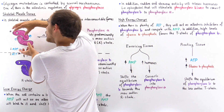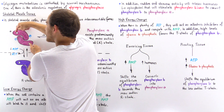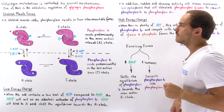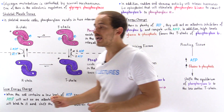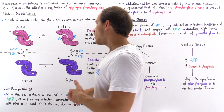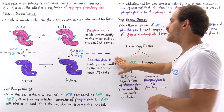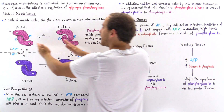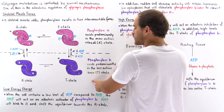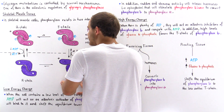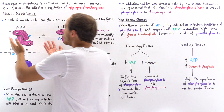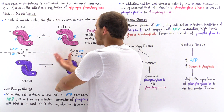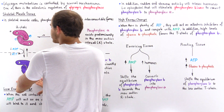In contrast, in the R state, as a result of the loose conformation of the dimer structure, the active sites are open — the R state is the fully active form. The activity will be high in the R state and low in the T state. Phosphorylase A exists predominantly in the R state, while phosphorylase B exists predominantly in the T state, meaning at equilibrium phosphorylase B has much more inactive T state than active R state.